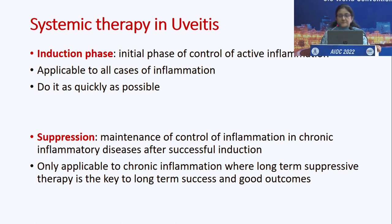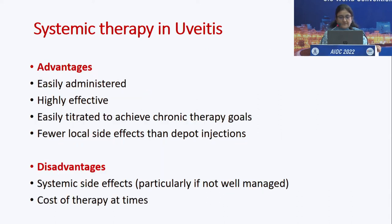Systemic therapy in uveitis has two phases: the induction phase and the suppression phase. The induction phase involves initial control of active inflammation, applicable to all cases and done as quickly as possible. Suppression applies only to chronic inflammation cases, where long-term suppressive therapy is key to good outcomes. Advantages of systemic therapy include easy administration, high efficacy, easy titration for chronic therapy, and fewer local side effects than depot injections. Disadvantages include systemic side effects and potentially unaffordable treatment cost.